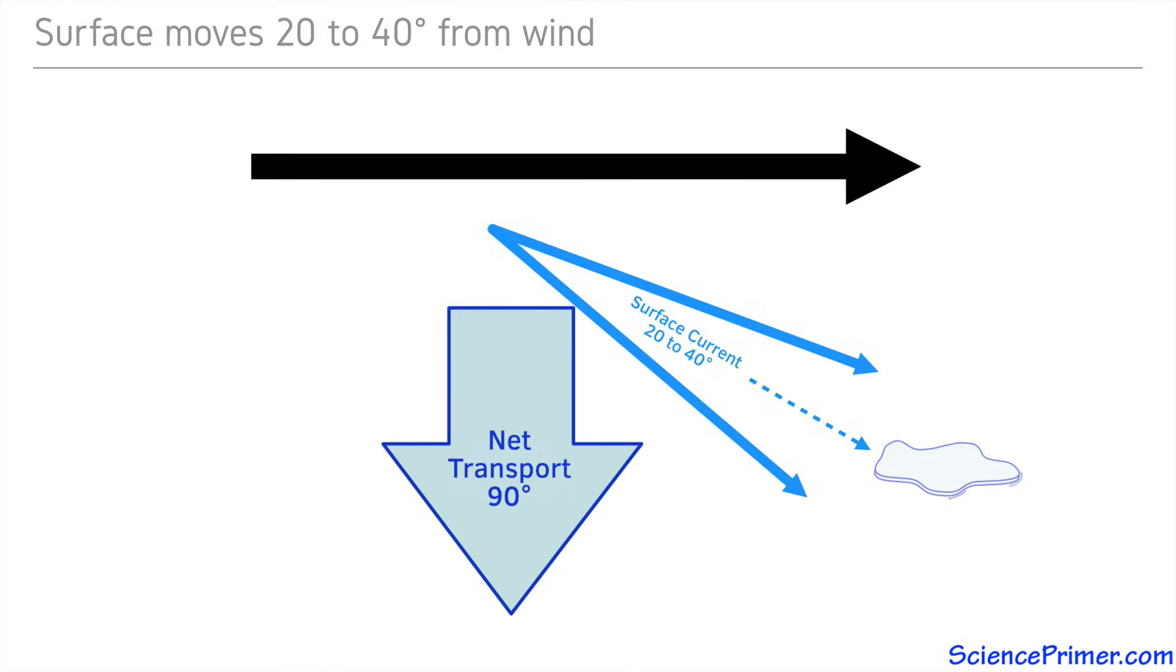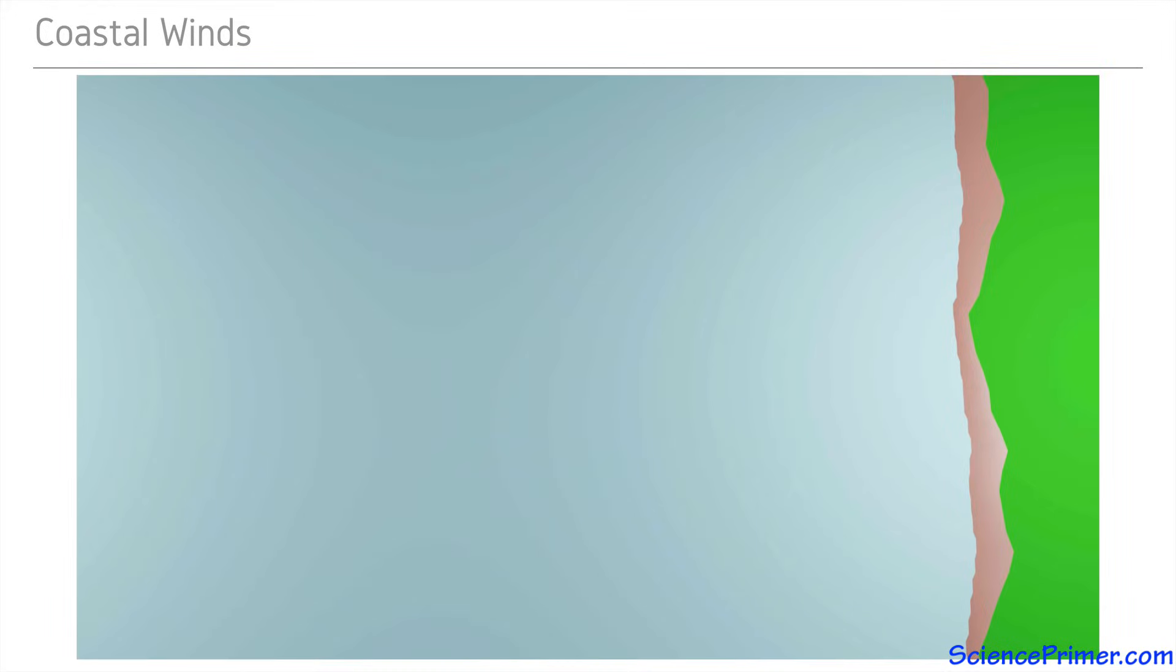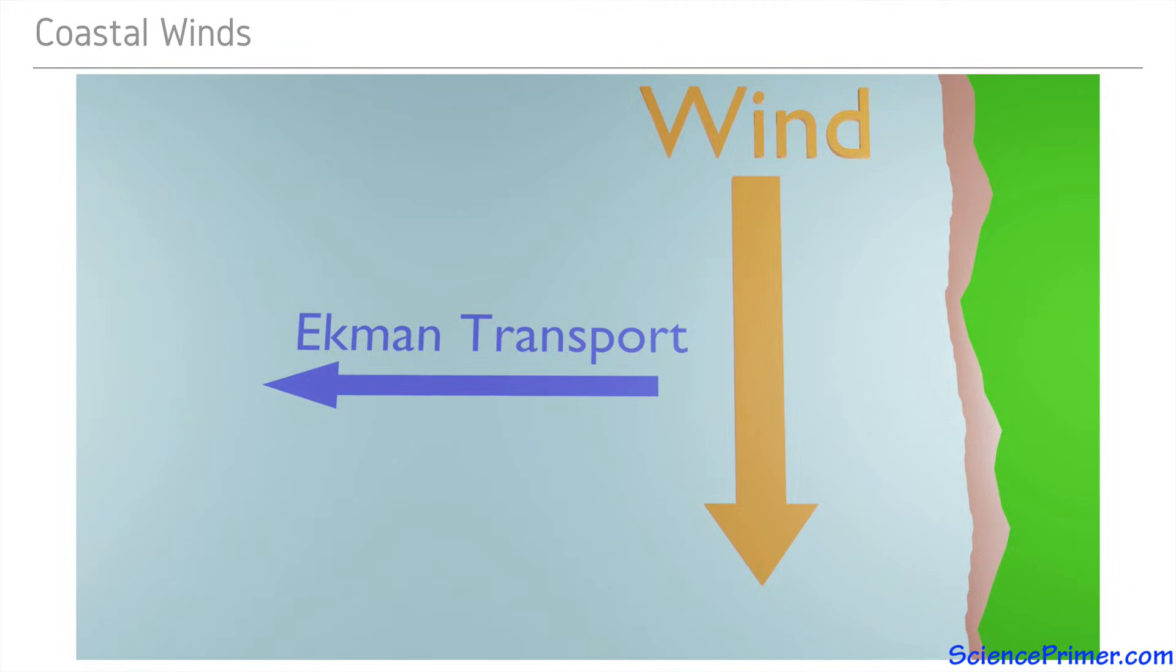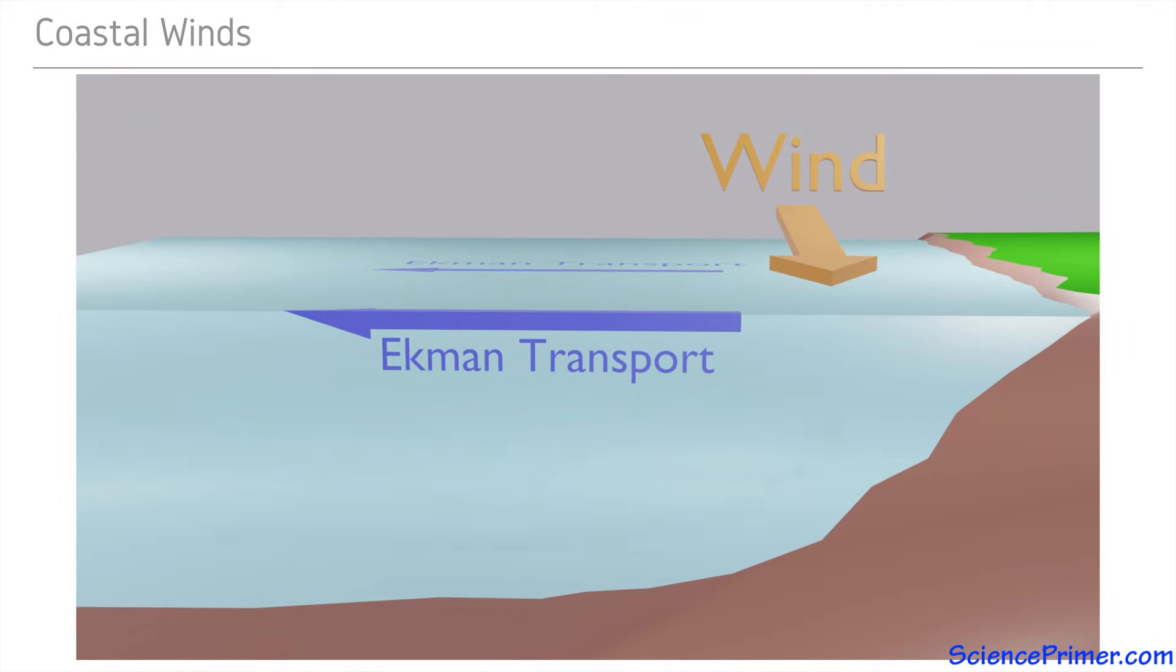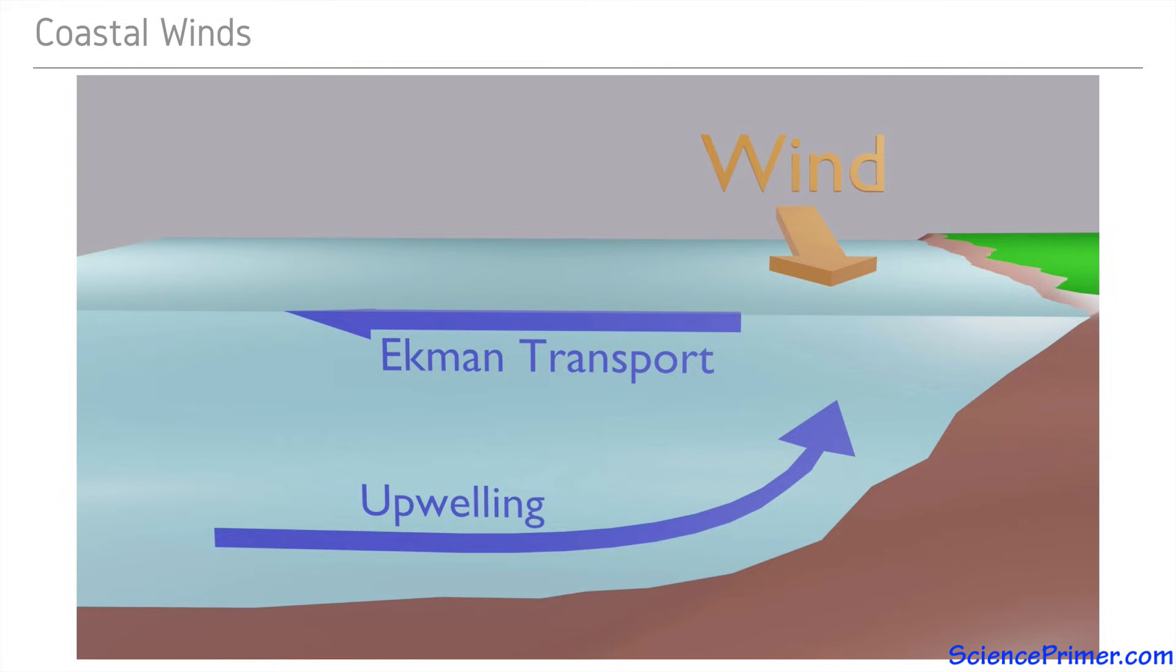The dynamics of Ekman transport contribute to some important features in the ocean environment. In coastal areas, where prevailing winds blow along the coast so that net water movement is offshore, the water pushed out to sea is replaced by deeper water, causing upwelling. The upwelling of this deeper water moves nutrients to the surface, making these regions of high productivity.